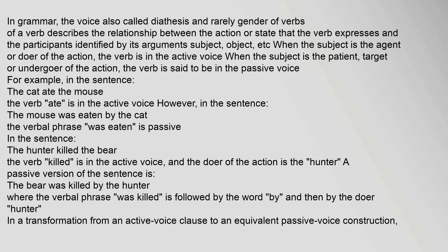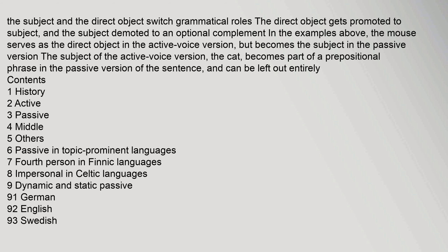A passive version of the sentence is "The bear was killed by the hunter," where the verbal phrase "was killed" is followed by the word "by" and then by the doer. In a transformation from an active voice clause to an equivalent passive voice construction, the direct object gets promoted to subject and the subject is demoted to an optional complement. For example, "the mouse" serves as the direct object in the active voice but becomes the subject in the passive version, while "the cat" becomes part of a prepositional phrase and can be left out entirely.